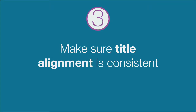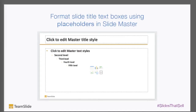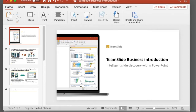Tip number three: make sure title alignment is consistent. Make sure all of your titles are aligned the same way slide to slide. You don't want to distract the audience and reduce the professionalism of your PowerPoint presentation by having the title jump when you change to the next slide. An easy way to do this for your whole presentation is to go into your slide master and format the title text boxes using placeholders.